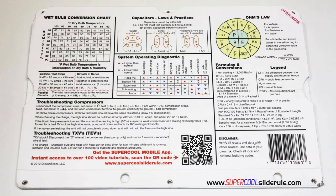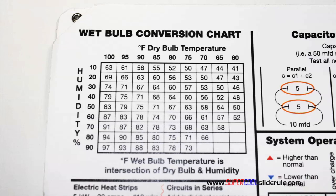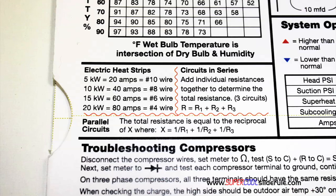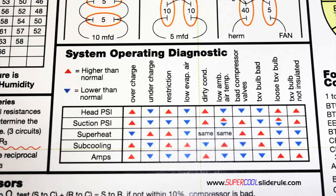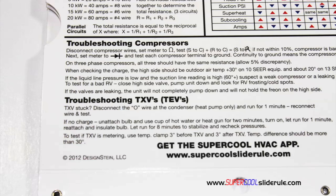The back cover contains required formulas. It has capacitor rules and practices, a wet bulb conversion chart, how to perform computations on series or parallel circuits, an electric heat strip guide, a complete system troubleshooting diagnostic chart, and how to troubleshoot compressors and TXV.